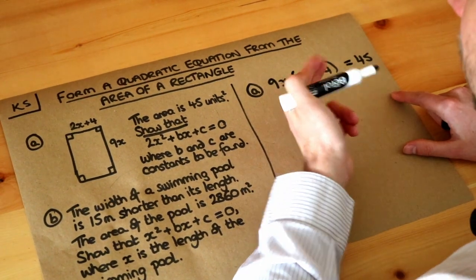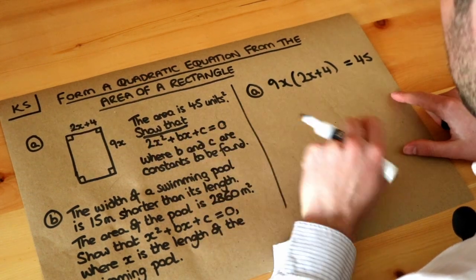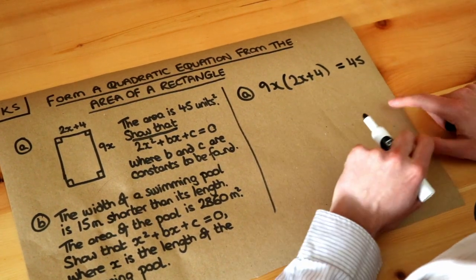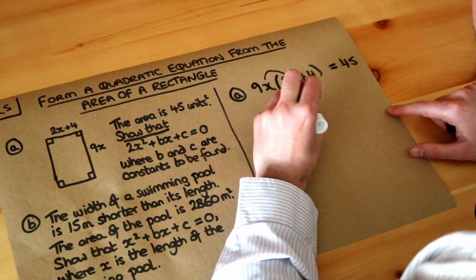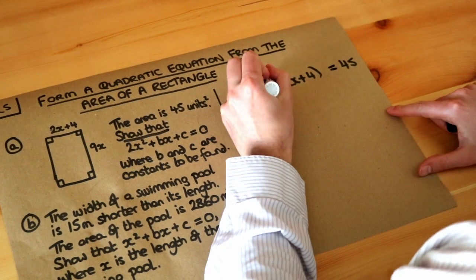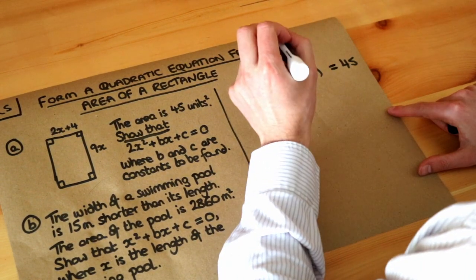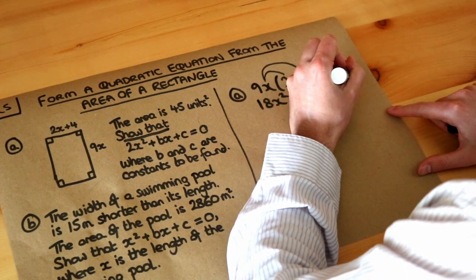And now we've got our equation. All we need to do is gradually manipulate it until we get to this equation here. So let's just first expand it out, get everything out in the open. We've 9x times 2x, 9 times 8 is 18, and x times x is x squared. We've also got 9x times 4, 9 times 4 is 36, so it's 36x equal to 45.